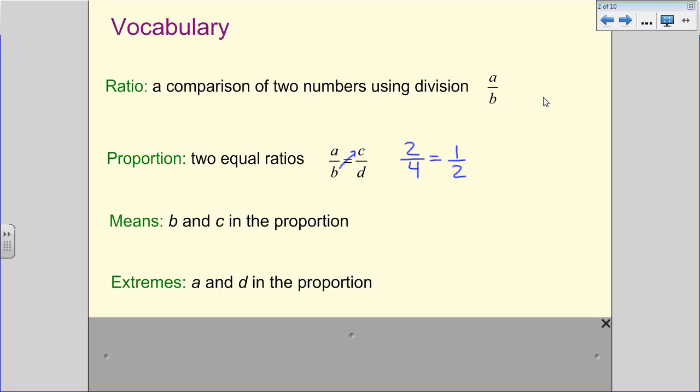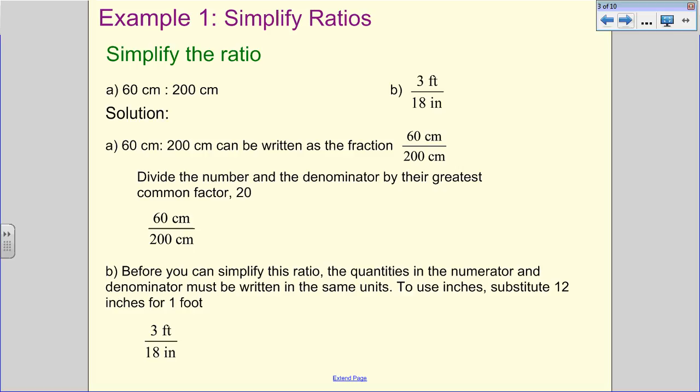B times C, the means, and then D times A, the extremes.